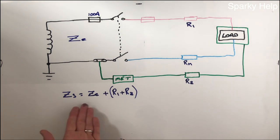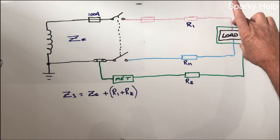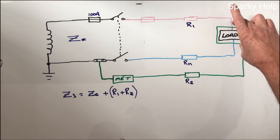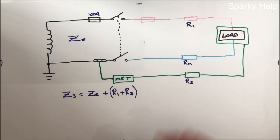ZS is what we know is made up of, ZS equals ZE plus R1 and R2. Remember ZS is a measurement at the extreme of every circuit, so at the furthest point of every circuit, because it's the highest resistance for every circuit.